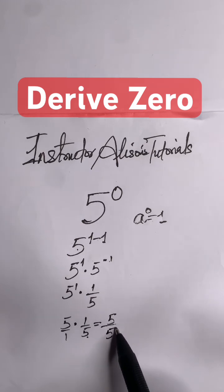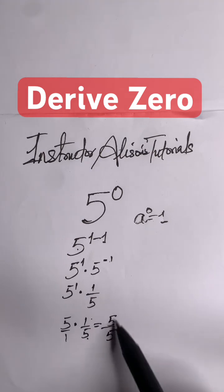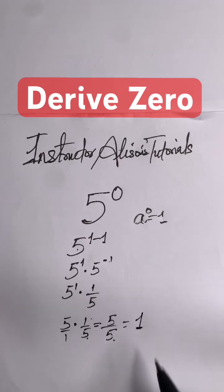In the numerator, 5 times 1 gives us 5. In the denominator, 1 times 5 gives us 5. Five divided by five is one. That's the proof.